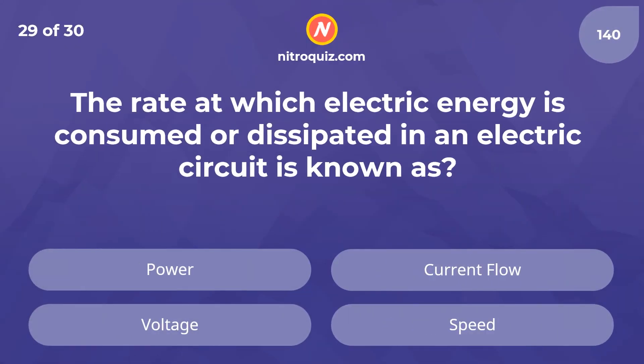The rate at which electric energy is consumed or dissipated in an electric circuit is known as what? The answer is power.